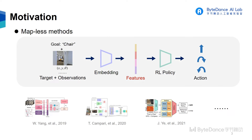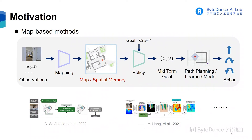Prior work can be briefly summarized as end-to-end methods and map-based methods. End-to-end methods extract the features of observations and the target, then feed them into a model to get an action directly. Map-based methods build an explicit or implicit map and get a mid-term goal using a policy, then a path-planning method or learned model is used to obtain an action.